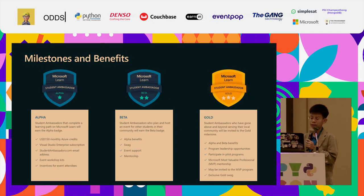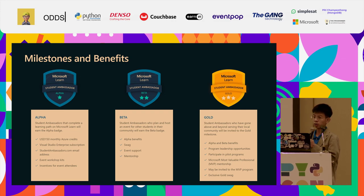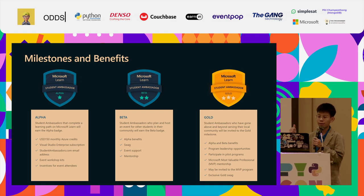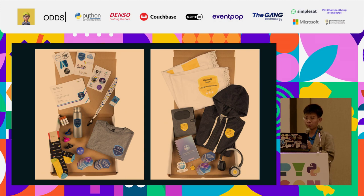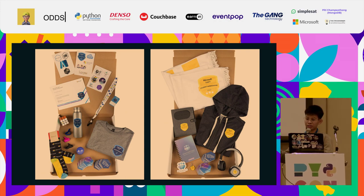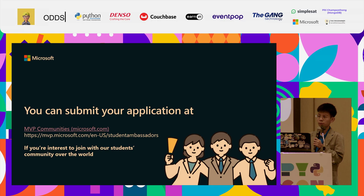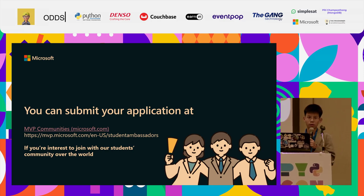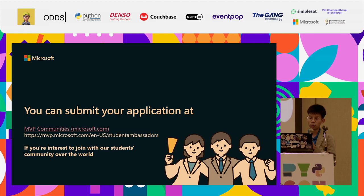The next thing is the milestones and benefits. We have three milestones: Alpha, Beta, and Gold. This is a preview of the kit that members receive. If you are interested in joining the community or the program, you can submit an application on the MVP community website.